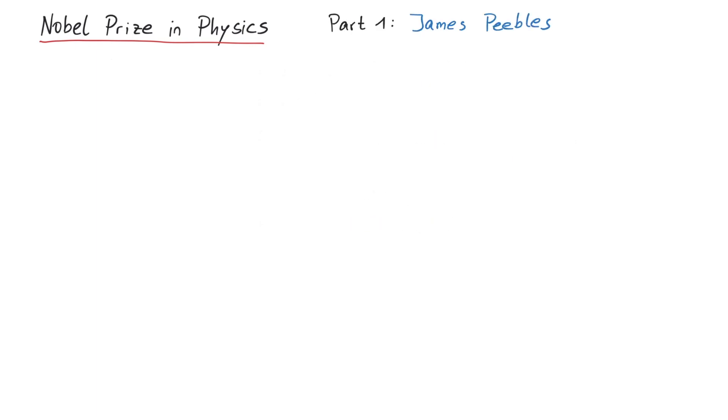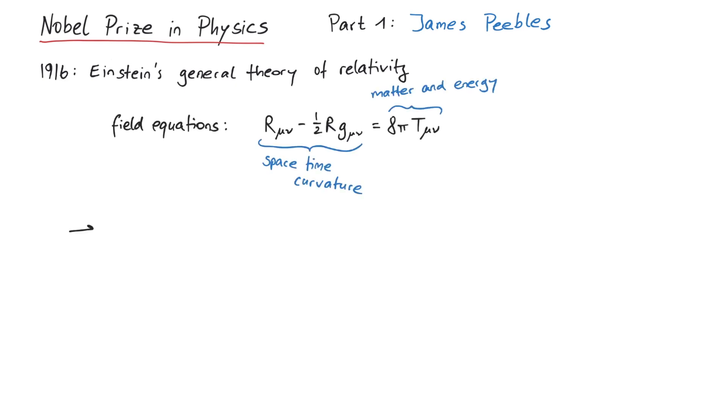Part 1: James Peebles. Since 1916, Albert Einstein's general theory of relativity is the basis for all calculations concerning our universe. But when he solved his own equations, he wasn't so sure whether they were right. His so-called field equations led to the conclusion that our universe is expanding.